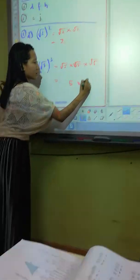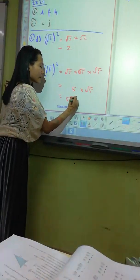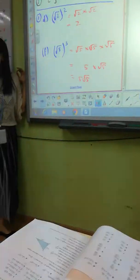Then this one, nothing much we can do, so just leave it as 5√5. Okay? So far okay?